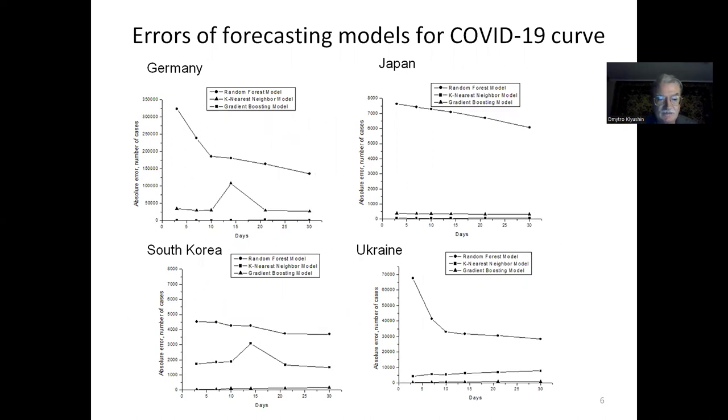The next slide illustrates the errors of forecasts provided by the random forest model, k-NN model, and gradient boosting model of the data from Germany, Japan, South Korea, and Ukraine. These data were published in the paper Chumachenko et al. in the journal Computation in 2022.